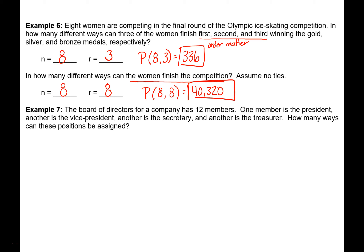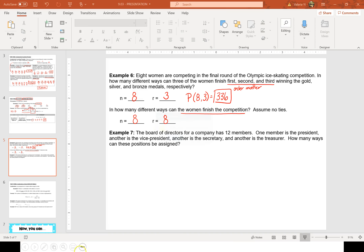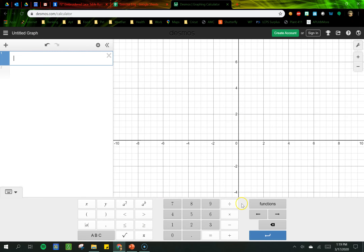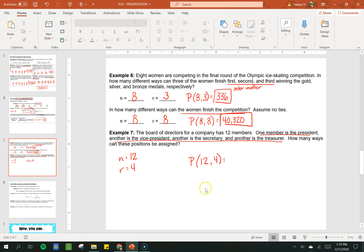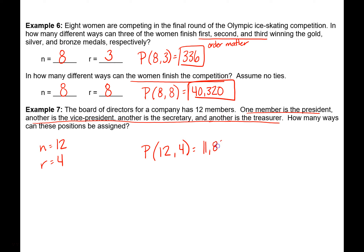Let's look at another example. The board of directors for a company has 12 members, so N equals 12. One member is the president, another is the vice president, another is the secretary, and another is the treasurer. Notice we have four separate roles — just like the last example had three separate positions — so this is going to be a permutation. How many ways can the positions be assigned? We have four positions to fill, so we do a permutation of 12 objects taken 4 at a time. In Desmos, that gives us 11,880 possible ways for those four positions to be assigned from a group of 12.